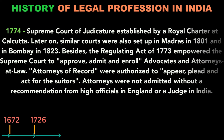The next important date is 1774: the Supreme Court of Judicature was established by a Royal Charter at Calcutta. Later, similar courts were also set up in Madras in 1801 and in Bombay in 1823. The Regulating Act of 1773 empowered the Supreme Court to approve, admit, and enroll all advocates and attorneys at law. Attorneys of record were authorized to appear, plead, and act for the suitors, but attorneys were not admitted without a recommendation from high officials in England or a judge in India.